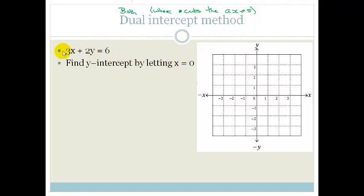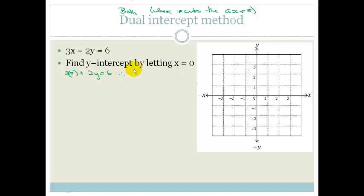We don't need to get the equation into standard form to use the dual intercept method. To find the y-intercept, we let x equal 0. So we go 3 times 0 plus 2y equals 6. We do that because if we want to find the y-intercept — where it cuts the y-axis — x is always 0 along that axis. So therefore 2y equals 6, and y equals 3, which means the graph is cutting the y-axis at 3.